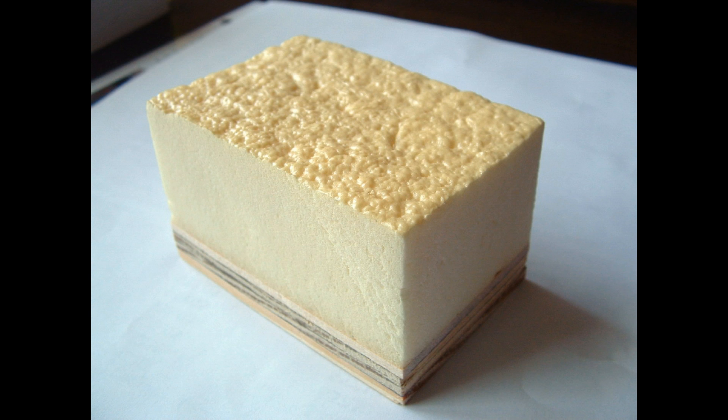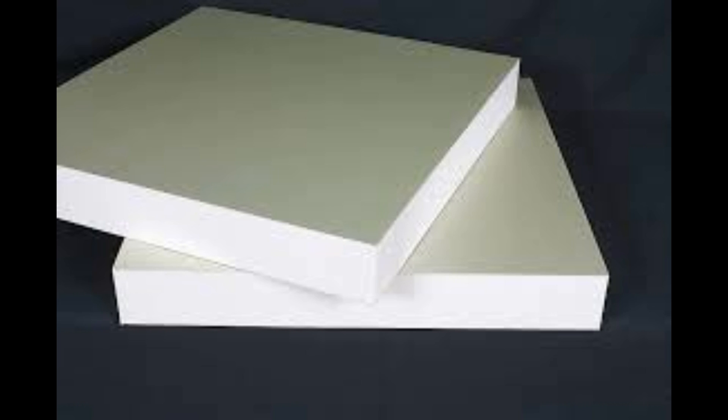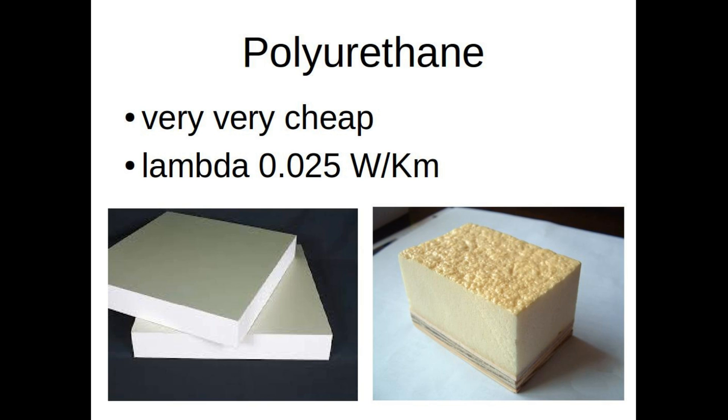Polyurethane to begin with is very cheap. A major supplier is Kingspan and it has excellent insulation properties, very low lambda value of 0.025, really very good.